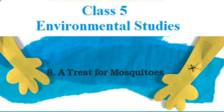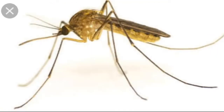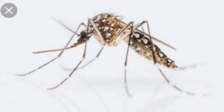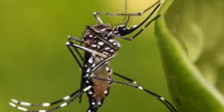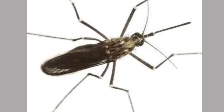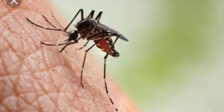Good morning students. Today we will study Chapter 8. Today's figure is a treat for mosquitoes. Mosquitoes are common flying insects that live in most parts of the world. They bite and feed on the blood of humans and other animals.